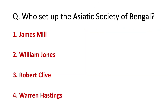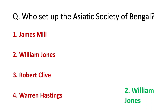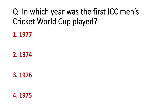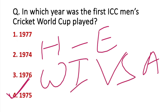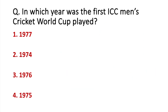Who set up the Asiatic Society of Bengal? It was established at Calcutta and the correct answer is William Jones. In which year was the first ICC Cricket World Cup played? The first ICC World Cup was played in 1975. The host country was England. The final was between West Indies and Australia, which was won by West Indies. The correct answer is 1975.